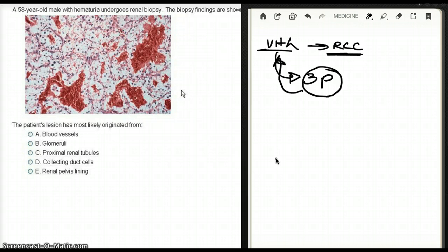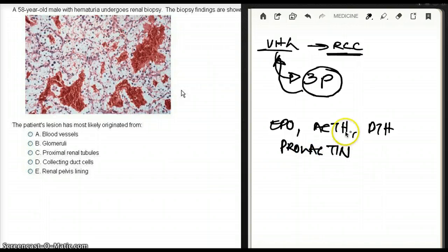Renal cell carcinoma is also associated with paraneoplastic syndrome. So you're going to see production of EPO, ACTH, PTH, and prolactin. All these can be expected from a renal cell carcinoma.